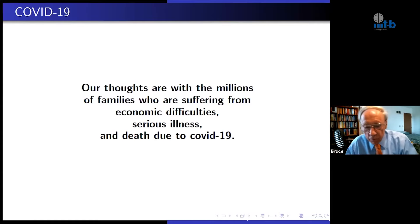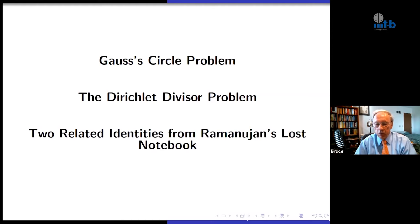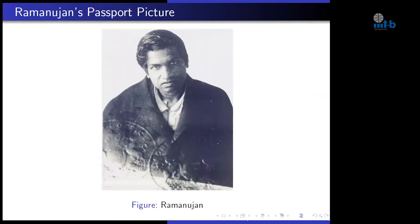Thank you very much for the introduction. I'd first like to express my concern and thoughts for the millions of families who are suffering from economic difficulties, serious illness, and death due to COVID-19. These are the three topics of my lecture, but I will talk about current developments after I talk about these topics. The Gauss circle problem is a very famous unsolved problem, as is the Dirichlet divisor problem. Ramanujan was definitely interested in these two problems. I will in particular tell you about two formulas published with the lost notebook that have intrigued me for almost 20 years.